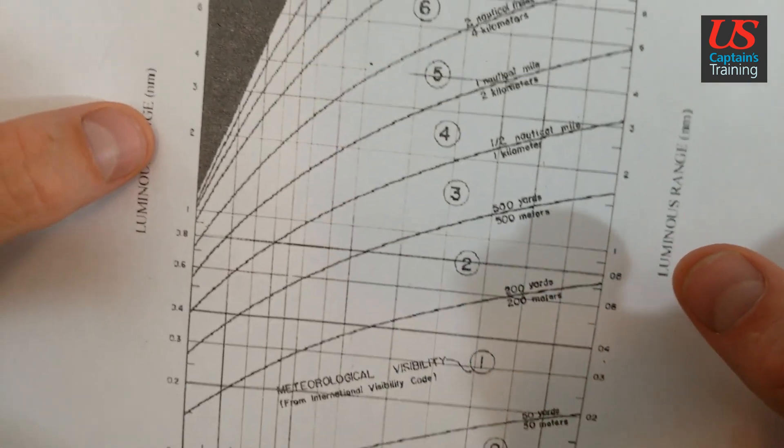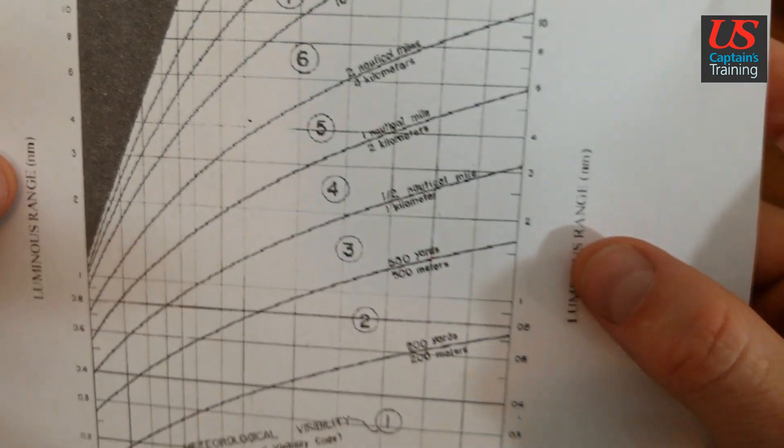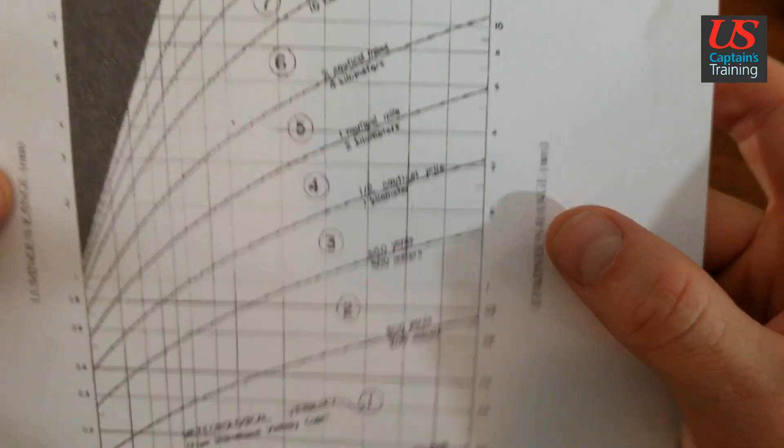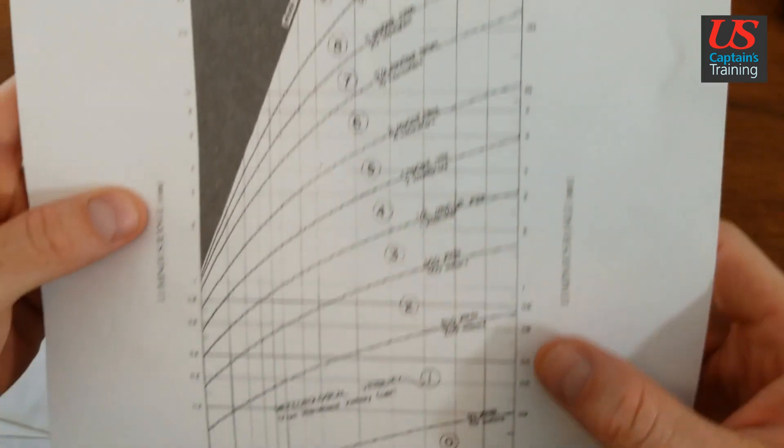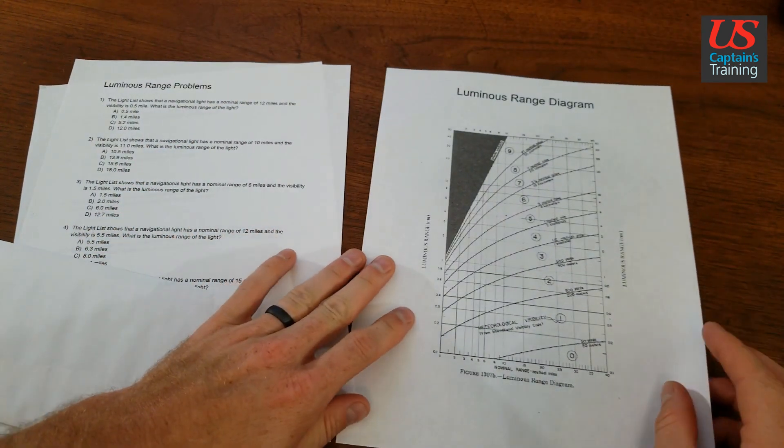Whereas down here, just 1 unit here between 1 and 2, it looks bigger than 10 units up here. So it's a logarithmic scale. It's a little bit different than you're used to.